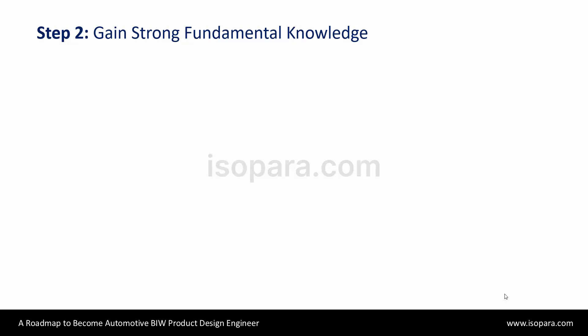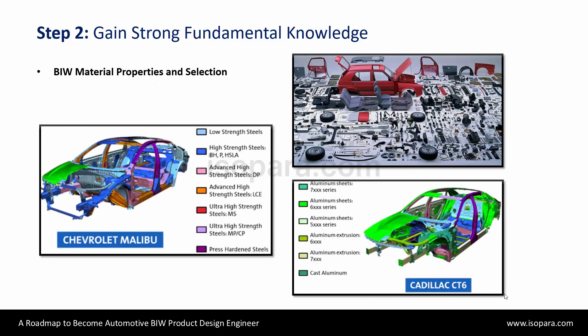You have to understand the BIW material properties and the selection of materials for various parts. You can see what the different materials are, how their grades are selected and changed according to the criteria of strength — how materials like steel and aluminum, their grades and alloys are selected, and how the various properties of materials are improved accordingly.